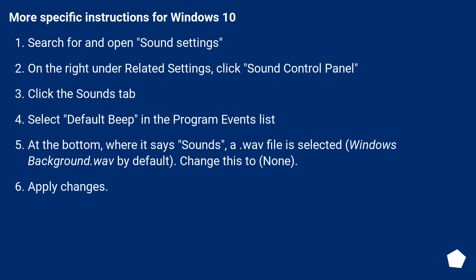More specific instructions for Windows 10. Search for and open sound settings. On the right, under related settings, click sound control panel. Click the sounds tab. Select default beep in the program events list.